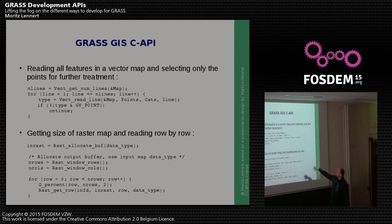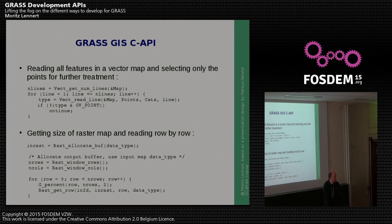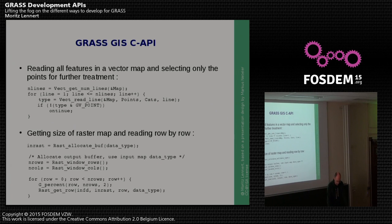You can look at the programming manual for the full details of the C API. Just to give some idea of what it looks like: here you see an example treating a vector map and going through it point by point, and in the bottom, going through raster data. Quite interesting is the discussion about the fact that GRASS actually allows different types of access to raster data — either row-based or segment-based — providing flexibility in how you access and deal with raster data.